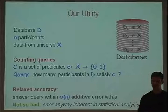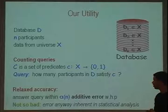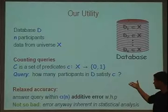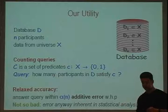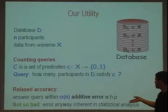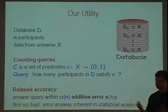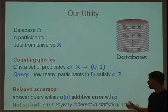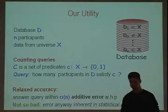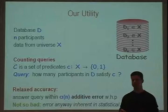When I say we want to answer how many participants satisfy a predicate, I don't mean an exact answer — I relax the notion of accuracy throughout the talk. What I want is to give the correct answer within some additive error alpha, where alpha is a function of the database size n. You might object that I'm giving up a lot on accuracy, but this really is not a huge concern in a statistical data analysis setting, because there's sampling error already inherent in statistical data analysis.